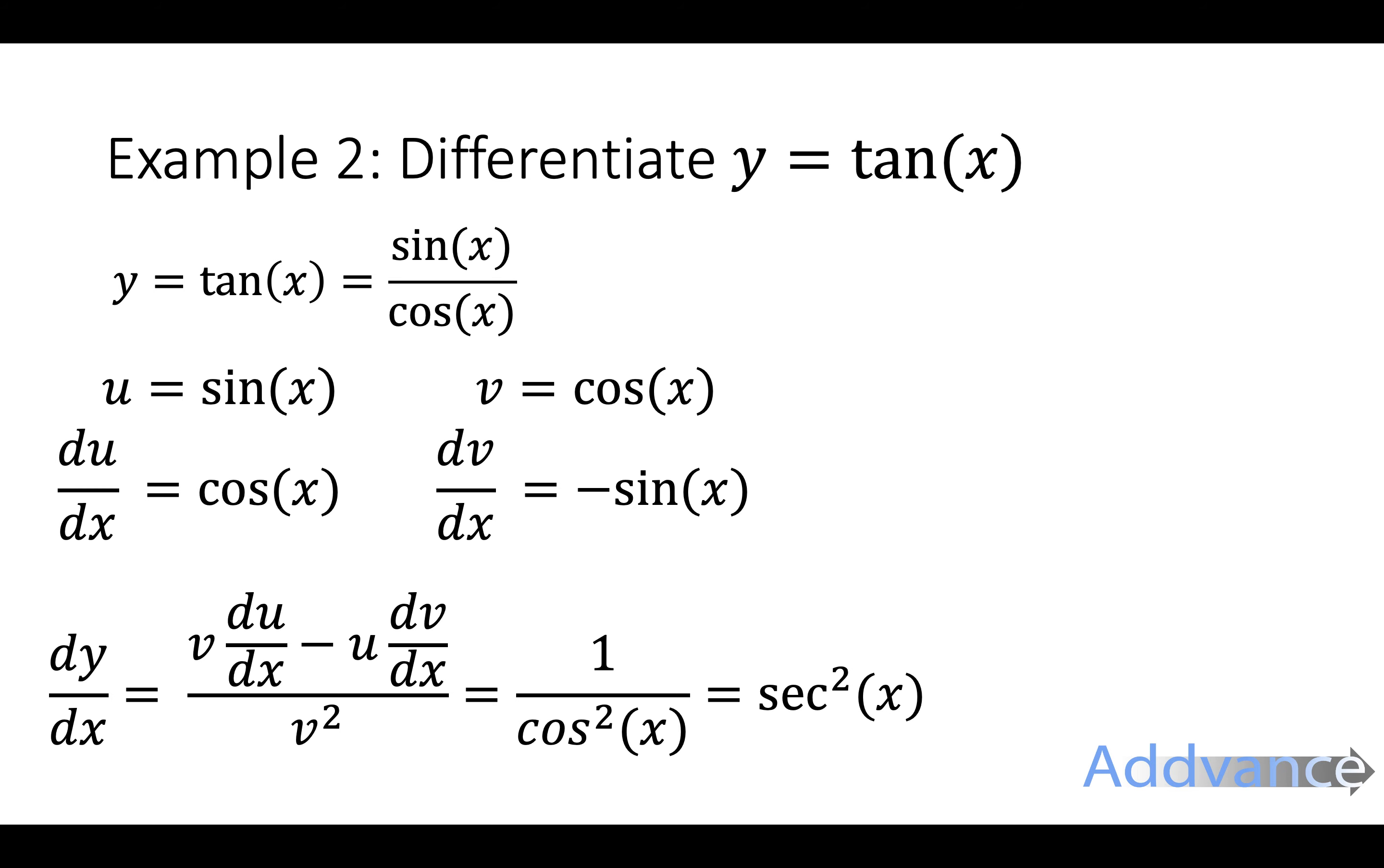If you don't know your trigonometric identities don't worry. You will come across these soon in your course. And we've got the final answer dy over dx is sec squared of x. And that means that if you differentiate tan of x you get sec squared of x every time. Fantastic.